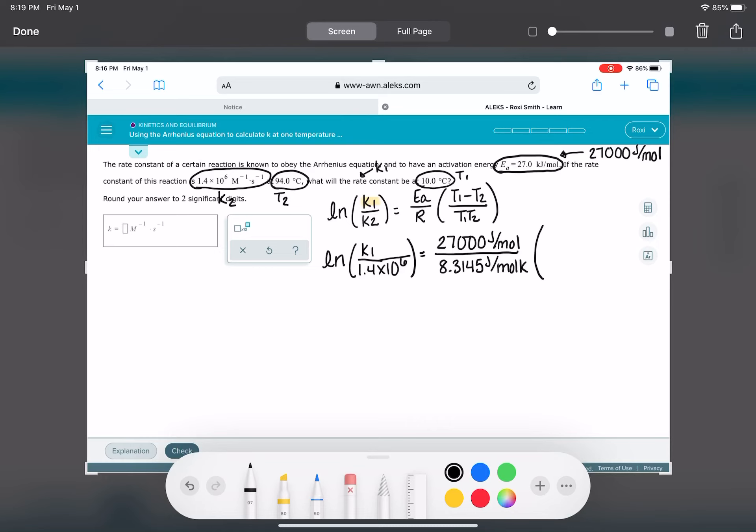And now let's get our temperatures in there. We need to convert these to Kelvin to get into the equation. So 94 plus 273, T2 is 367, and T1 is 283. So T1 is 283 minus 367 over 283 times 367.